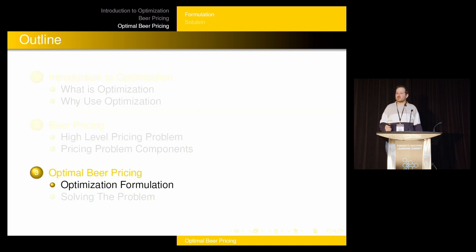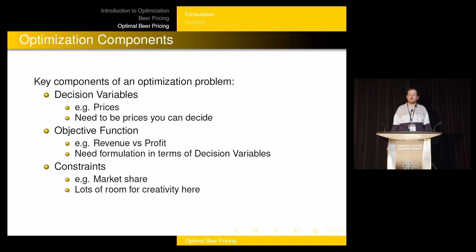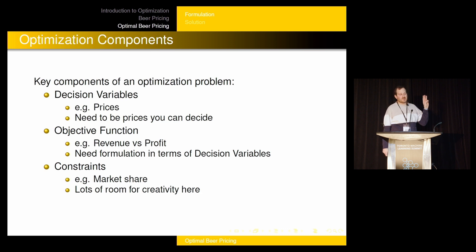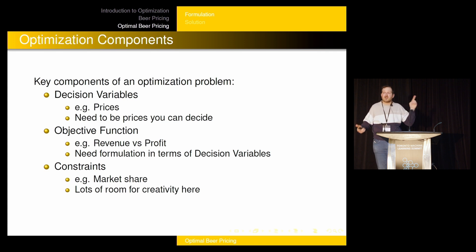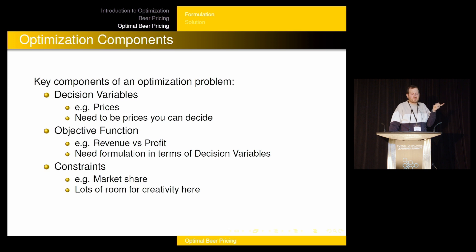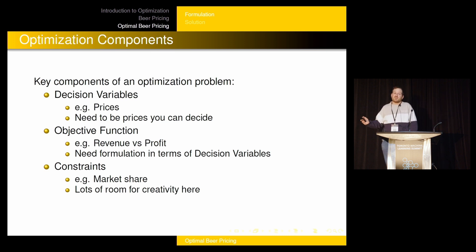Let's talk about how to formulate an optimization problem for optimal beer pricing. There are three key components. The first is your decision variables — the thing you get to decide. In the case of optimal beer pricing, it's the prices. We're going to choose prices to optimize something — market share, revenue, or whatever we want.